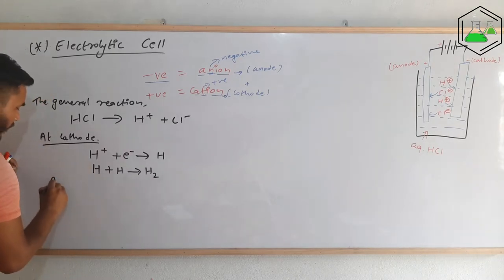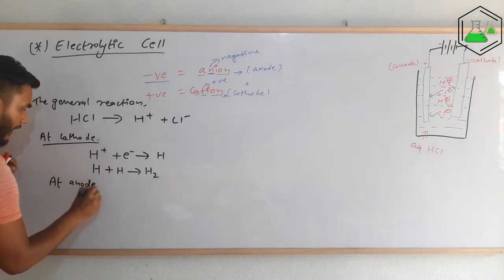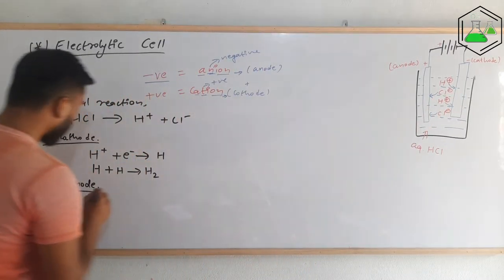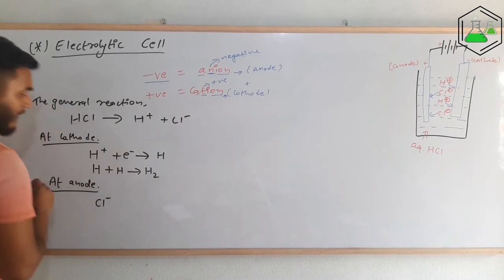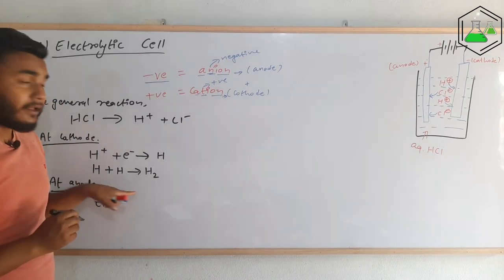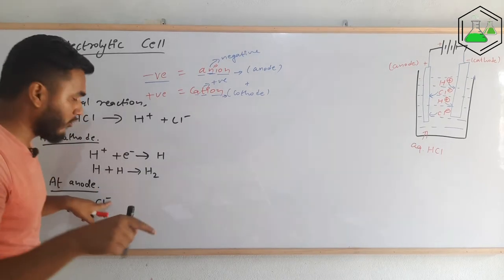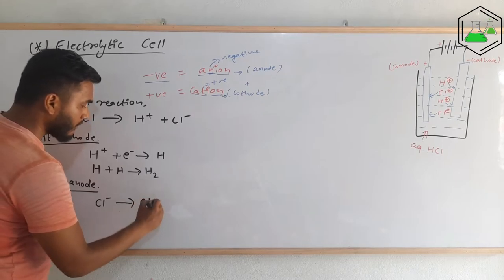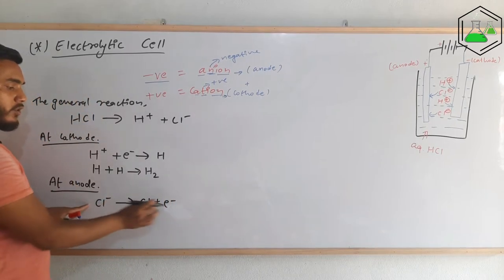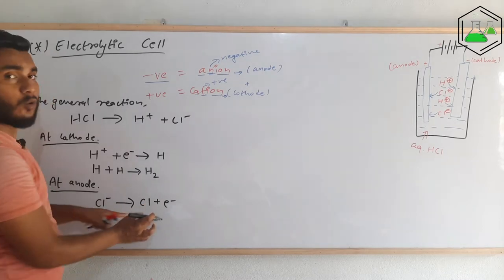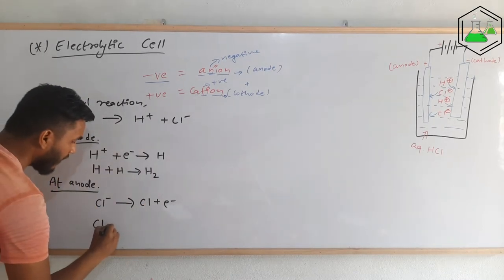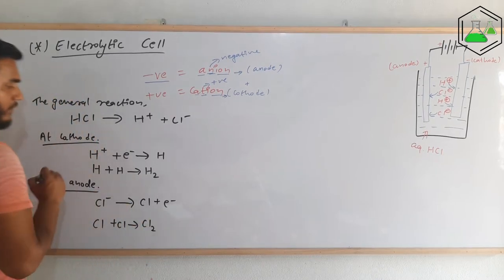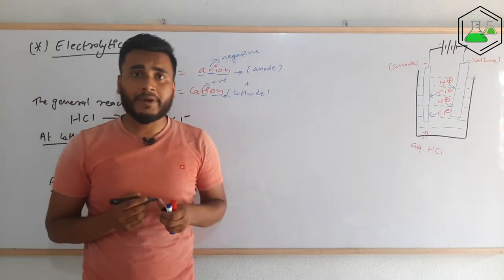Similarly, at the anode, Cl− is coming towards it. To convert Cl− into Cl, it needs to lose one electron because it has an extra electron. So Cl− loses one electron and converts into a chlorine atom. This Cl then reacts with another Cl to form Cl2. This is the reaction that happens at the anode.